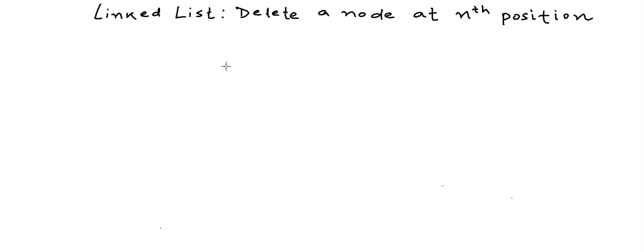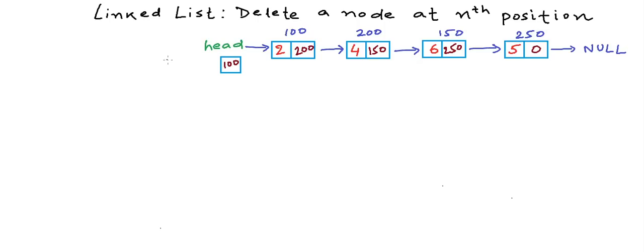In our previous lesson we wrote a program to insert a node at nth position or a given position in a linked list. Now in this lesson we will write a program to delete a node at any given position in a linked list.